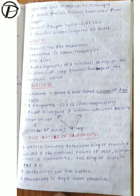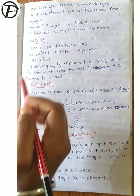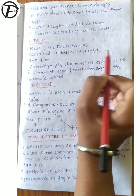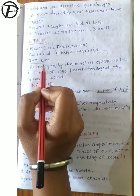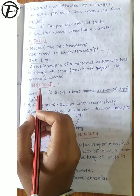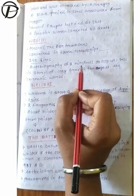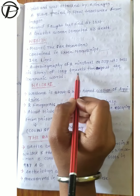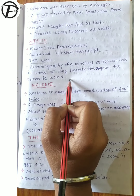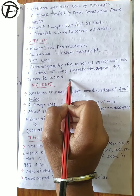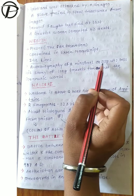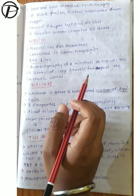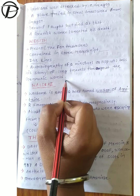The next important work is Widsith, which means 'the far traveler.' It is contained in the Exeter manuscript of 143 lines - a quite short work. The plot is that it is the autobiography of a minstrel or scop who tells his story of long travels throughout the Germanic world.